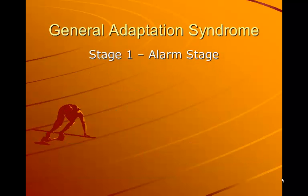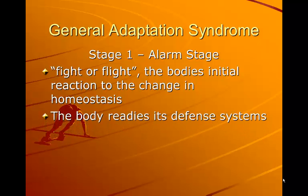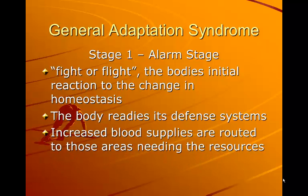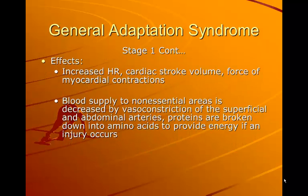General Adaptation Syndrome. Stage 1 is the alarm stage — fight or flight. This is the body's initial reaction to the change in homeostasis. The body is going to ready its defense systems, and increased blood supplies are routed to areas needing the most resources. Effects at this stage include increased heart rate, cardiac stroke volume, and force of myocardial contractions. Blood supply to non-essential areas is decreased by vasoconstriction of superficial and abdominal arteries, and proteins are broken down into amino acids to provide energy if an injury occurs.